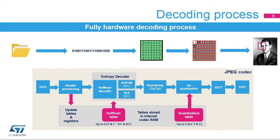The decoding process follows the JPEG baseline algorithm. The file data are sent to the input FIFO. The file header is parsed, and the corresponding internal RAM tables are updated. Once the header has been parsed, an interrupt can be raised.